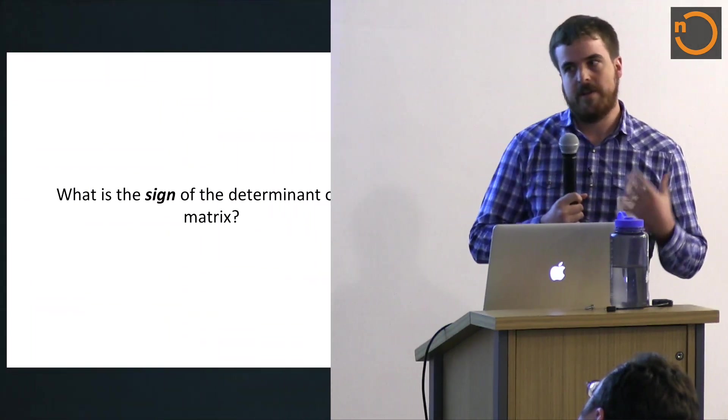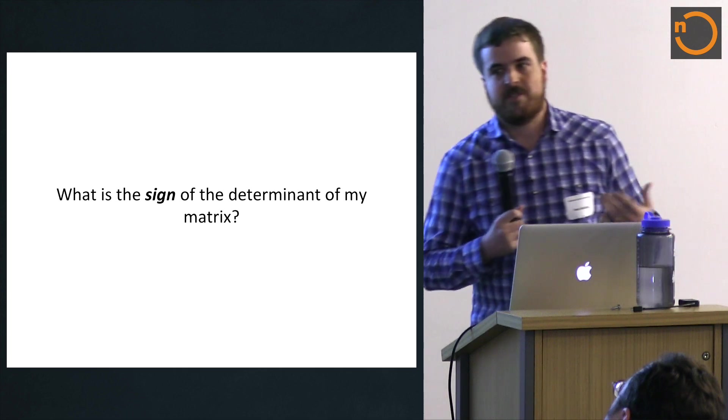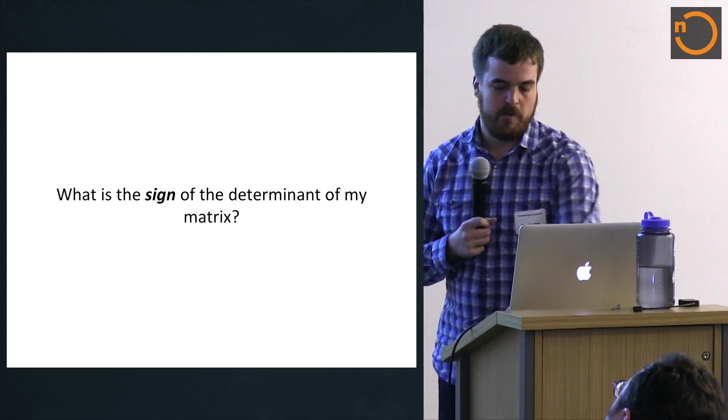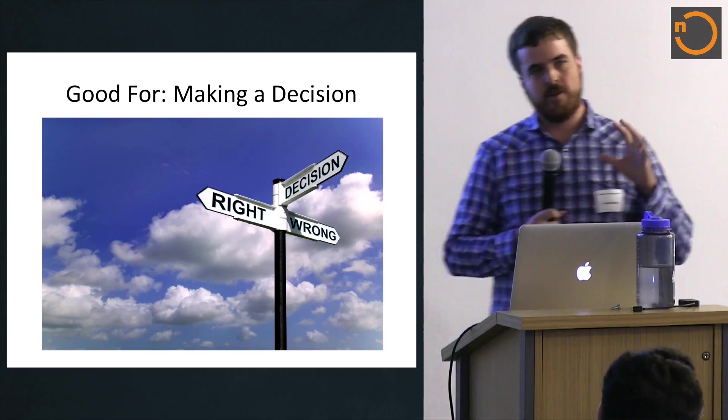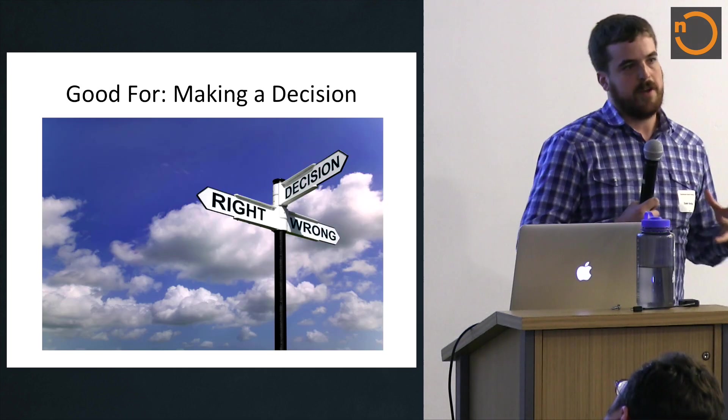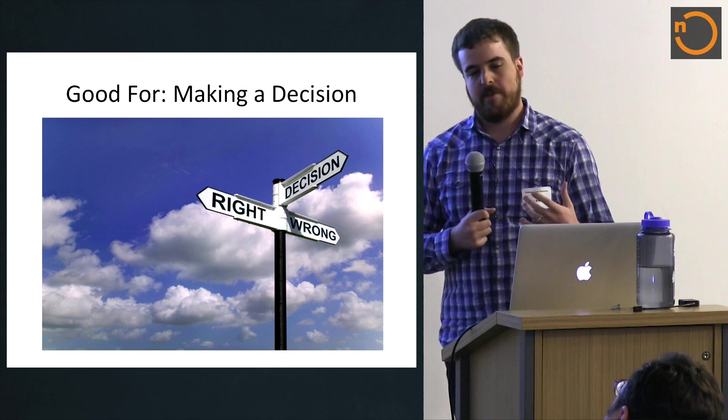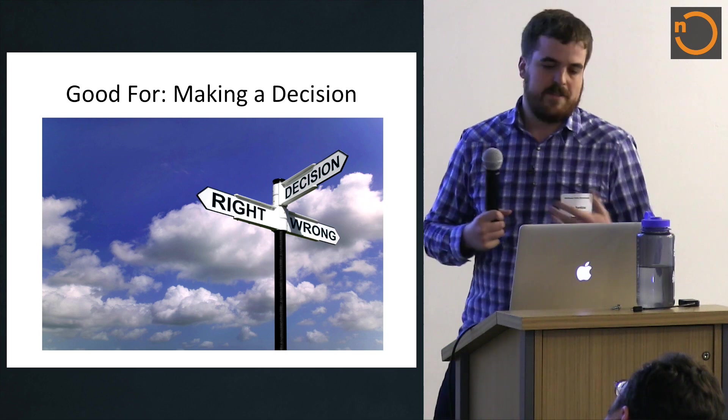A better question to ask of floating point filters is, what is the sign of the determinant of my matrix? So you want to know, is it zero? So you know, can I actually solve this matrix or not? Or if you want to know if it's positive or negative, we'll see an example of that later. The key here is that it's good when you need to make a decision. So you have a predicate you want to solve. You need to know some property of the number, is it zero? What's the sign of this number?